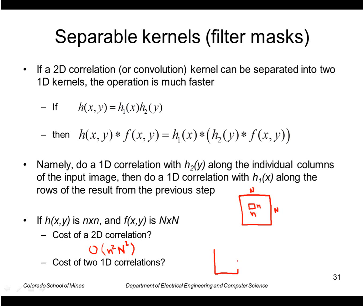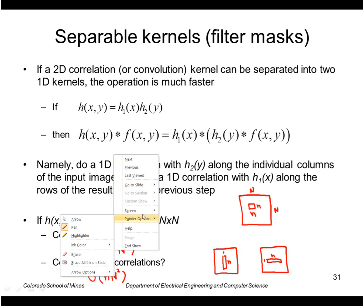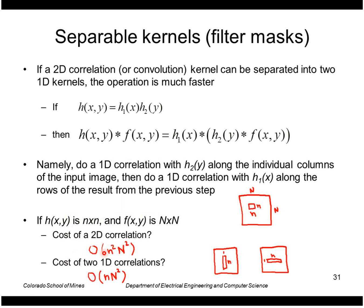For the separable case, with an n by 1 filter followed by a 1 by n, the cost of convolving a 1 by n filter is just n times N squared, plus the same for the other direction, so 2n times N squared. Basically, as my filter size grows, a 2D correlation grows with the square of the filter size, whereas if I separate it, it just grows linearly with the filter size.